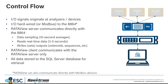The 8864 takes those signals in, and the RataVue server — typically a rack mount server next to the 8864 — runs RataVue services in the background, constantly communicating with the 8864. It does three main methods of communication: data sampling, where it takes 10-second averages from the 8864 and stores those in the database permanently; reading real-time data every three to five seconds for the user interface so you can see numbers changing more rapidly; and handling any writes down to the device.